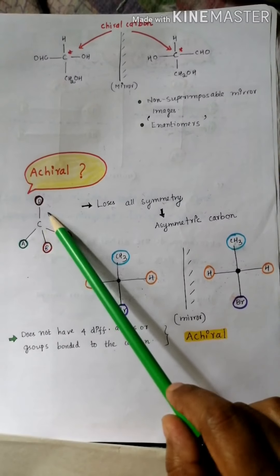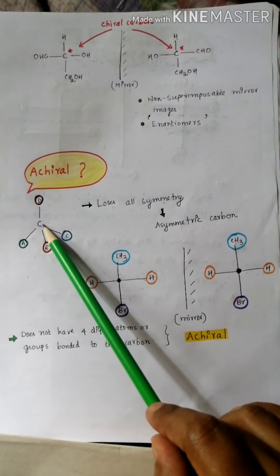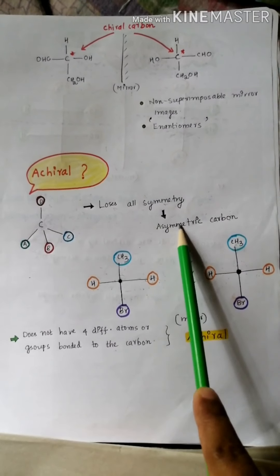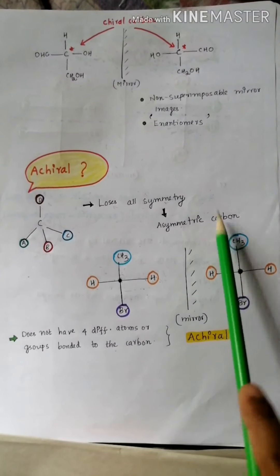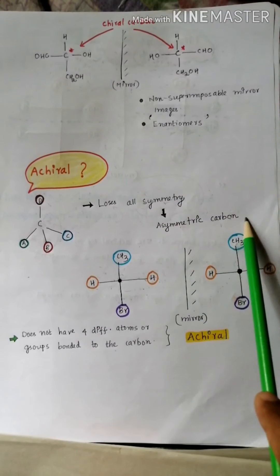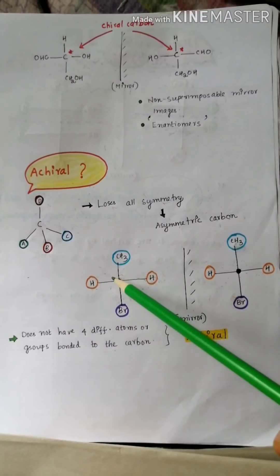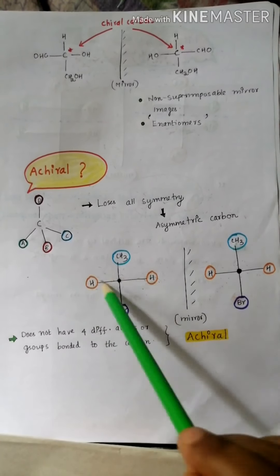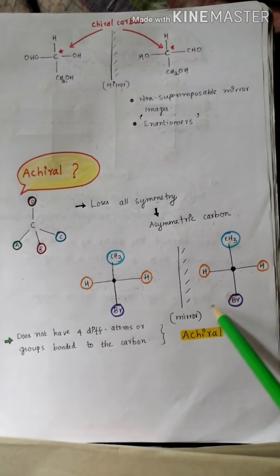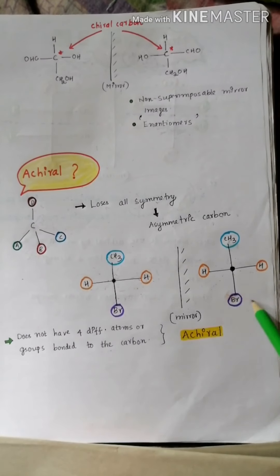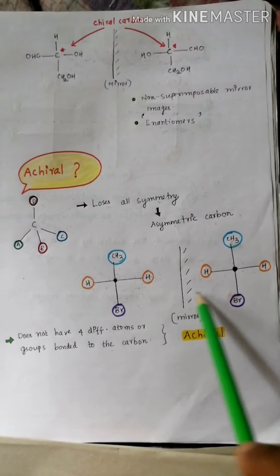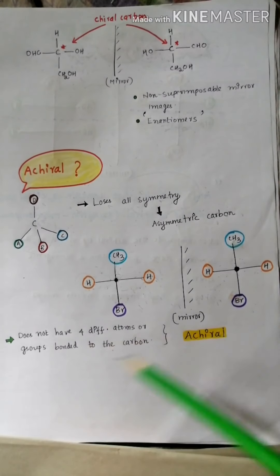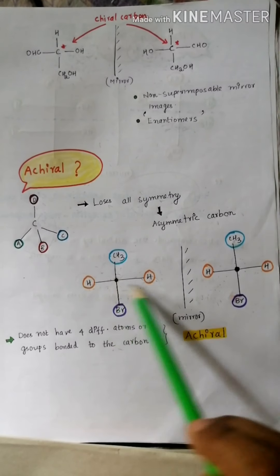Now, what do we mean by achiral? Whenever a carbon is attached with four different groups, it loses all kinds of symmetry, leading to the formation of an asymmetric carbon. Achiral means a carbon is attached with three different groups in which one is the same as another — two groups are similar. Taking its mirror image, you can observe the mirror image will be an exact copy of the object. Both are the same — there is no non-superimposable mirror image relationship. These kinds of compounds are called achiral, meaning the carbon does not have four different groups; here two groups are exactly the same.